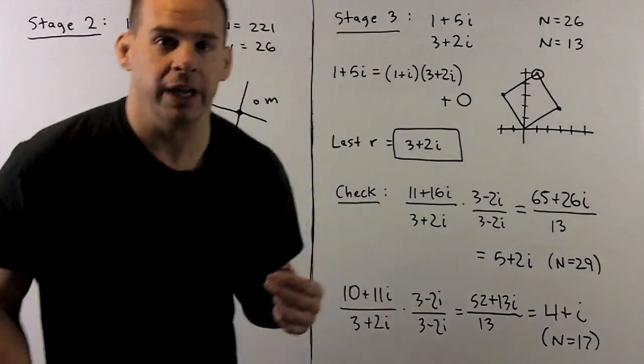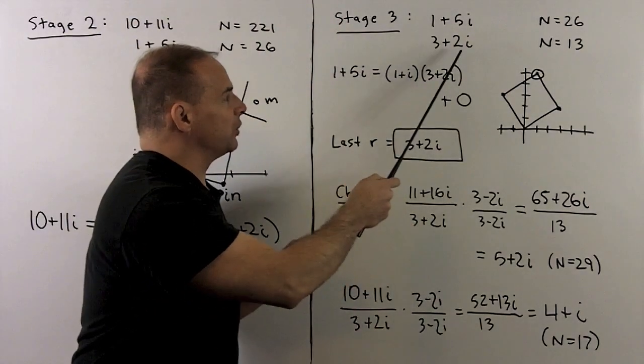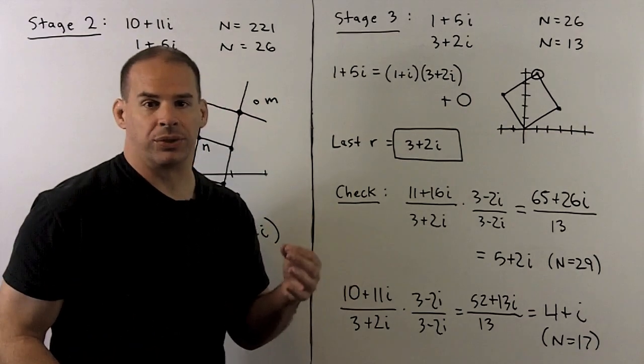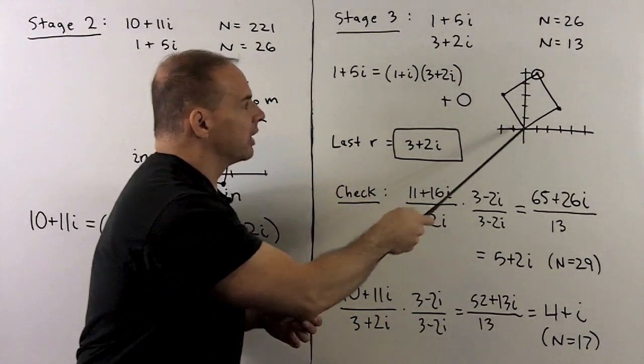For stage three, we have m equal to 1 plus 5i, n is equal to 3 plus 2i. So the N's are 26 and 13. We set up the lattice for 3 plus 2i.